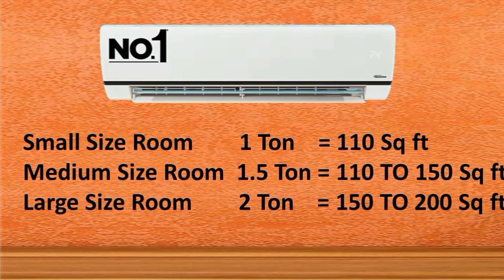How much AC capacity does your room need? If you have a small size room less than 110 square feet, you need a 1 ton AC. If you have a medium size room of 150 square feet, you need a 1.5 ton AC. For a large size room of 250 square feet, you need a 2.5 ton AC.